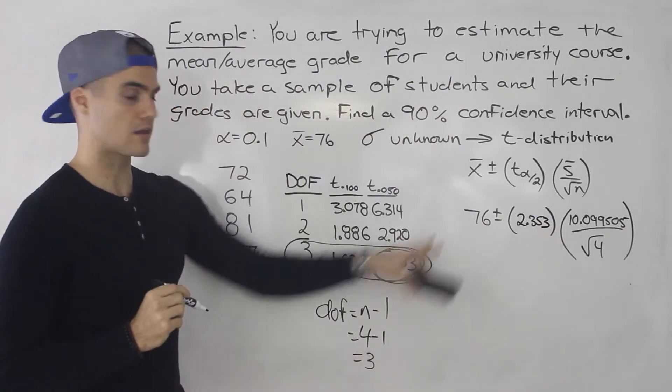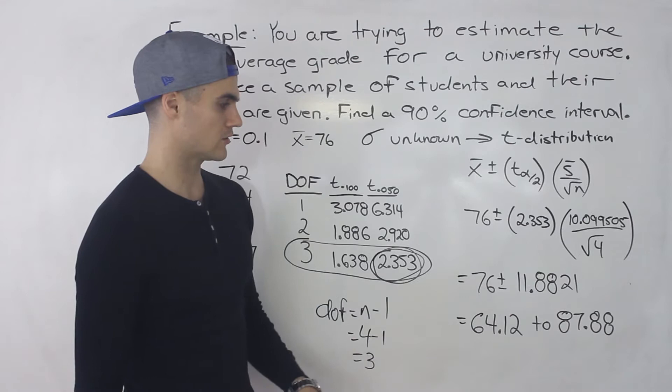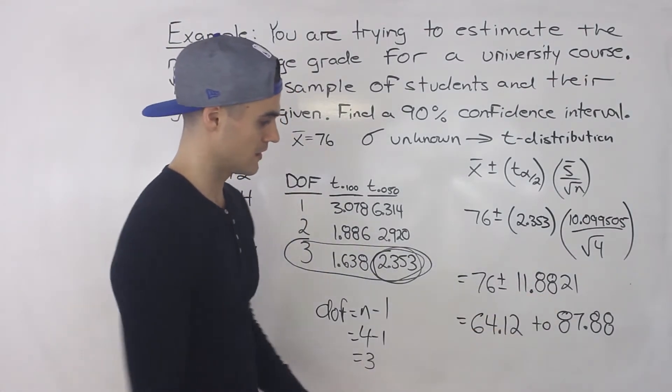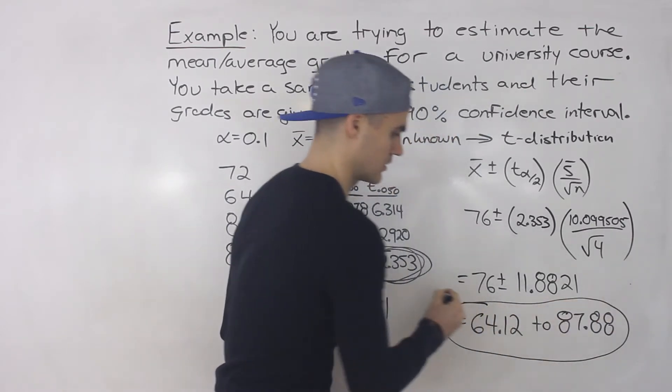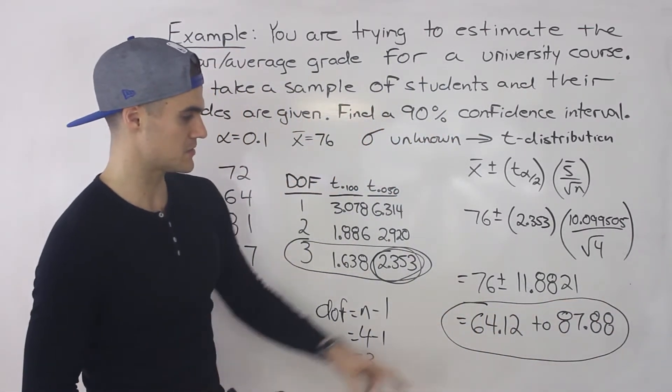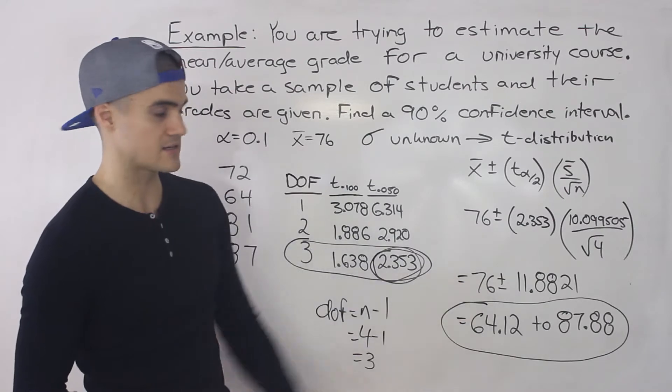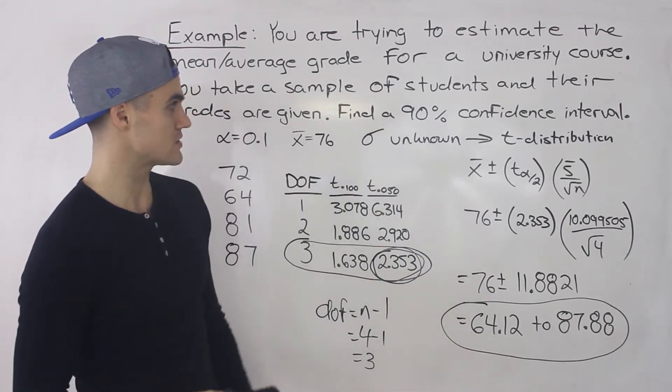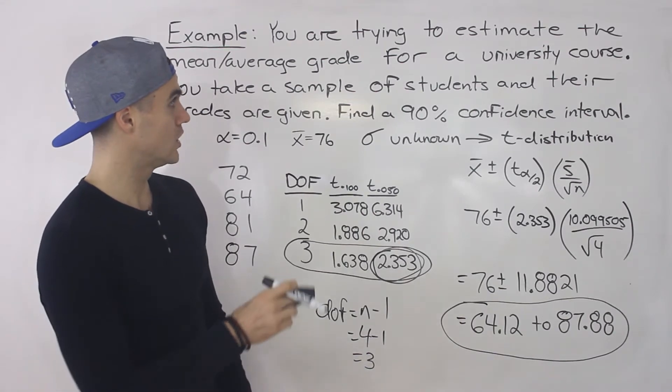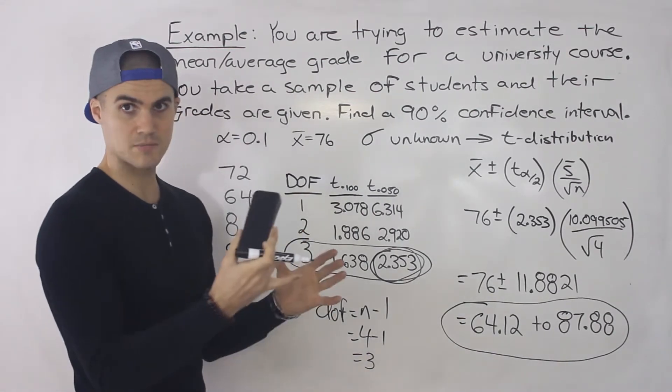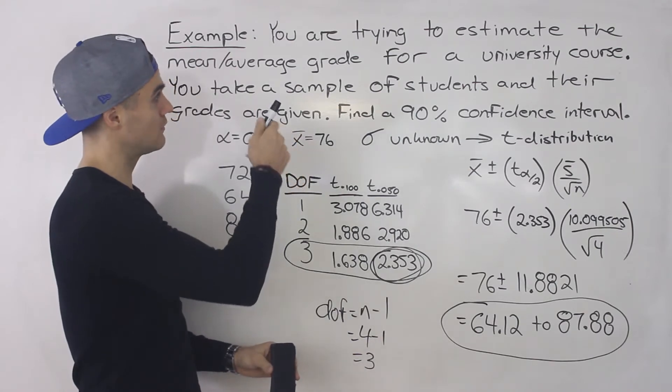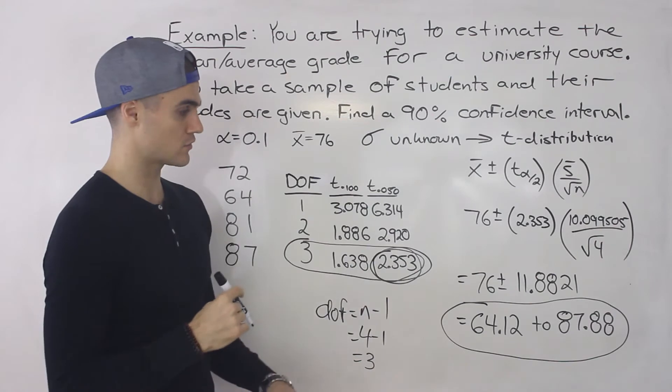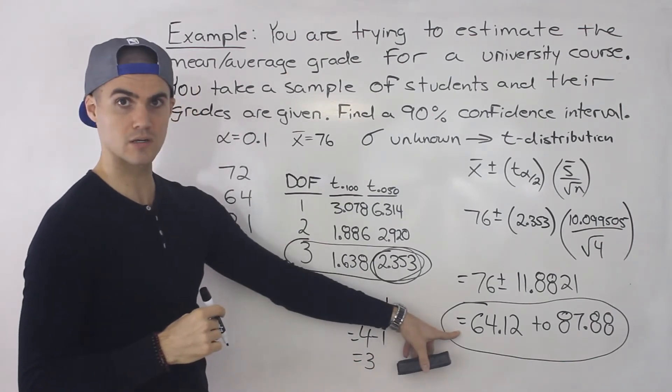And now we can just calculate the confidence interval. When you do that in the calculator, you'd end up getting 11.8821 for the margin of error. And so the confidence interval rounded to two decimal places is going to be 64.12 to 87.88. So that's the answer to this question. That is the 90% confidence interval for the estimate with 90% confidence that the mean or average grade for all of the students taking the university course is going to be between those values.